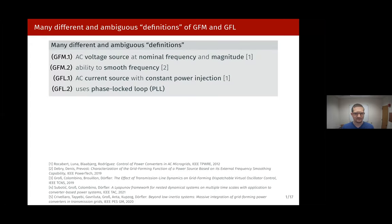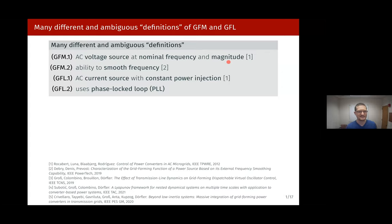Before jumping into the details, one key motivation for this consortium effort is that there are no really clear or precise definitions of what we mean by grid forming control. One of the earliest definitions basically says a grid forming converter is an AC voltage source at nominal frequency and magnitude. By that definition, even a large-scale power station would not be grid forming, so you can immediately see the problems with this.